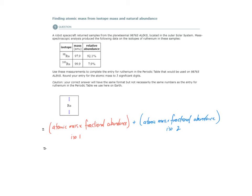Let's plug in what we know. The atomic mass of isotope 1 is 98 rounded, but we're given a more precise mass: 97.9 amu. The fractional abundance we get from the relative abundance, 92.1%. Divide that by 100, or move the decimal place to the left twice, which gives us 0.921—no units associated with that.